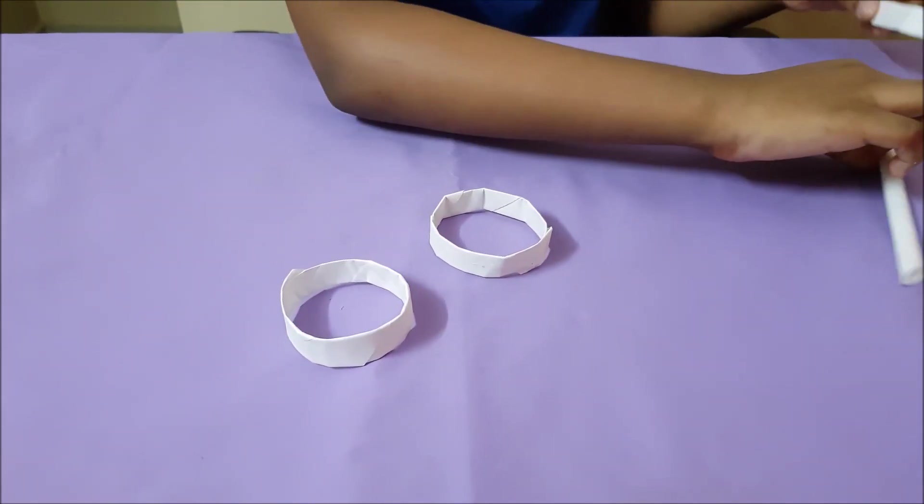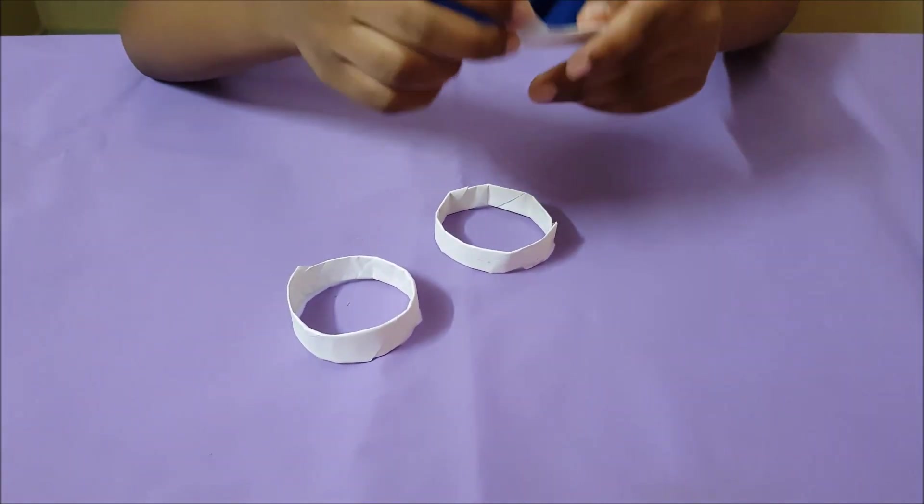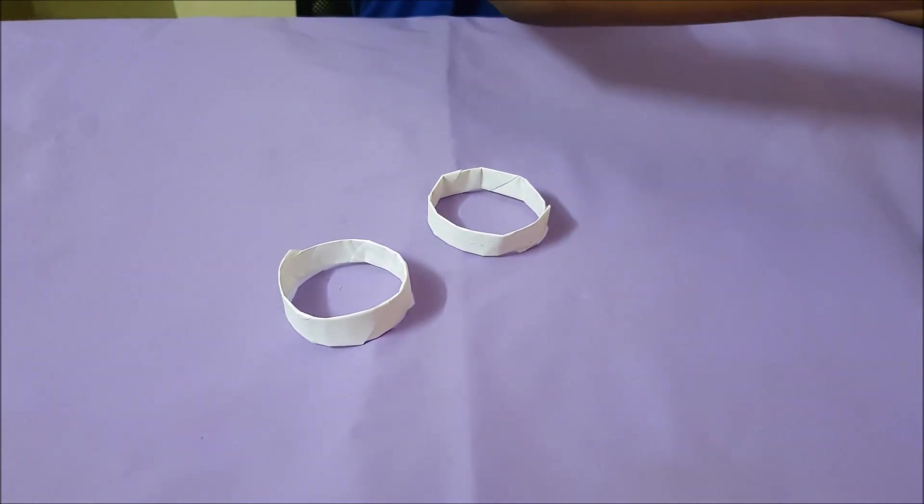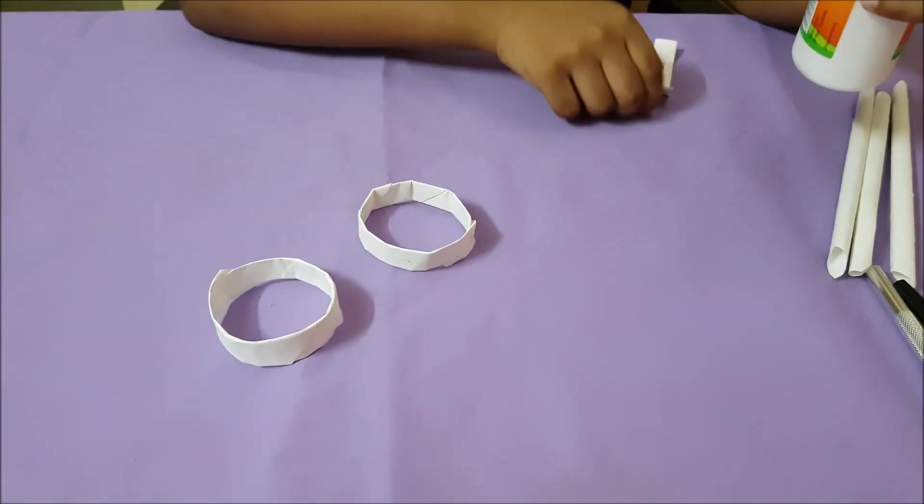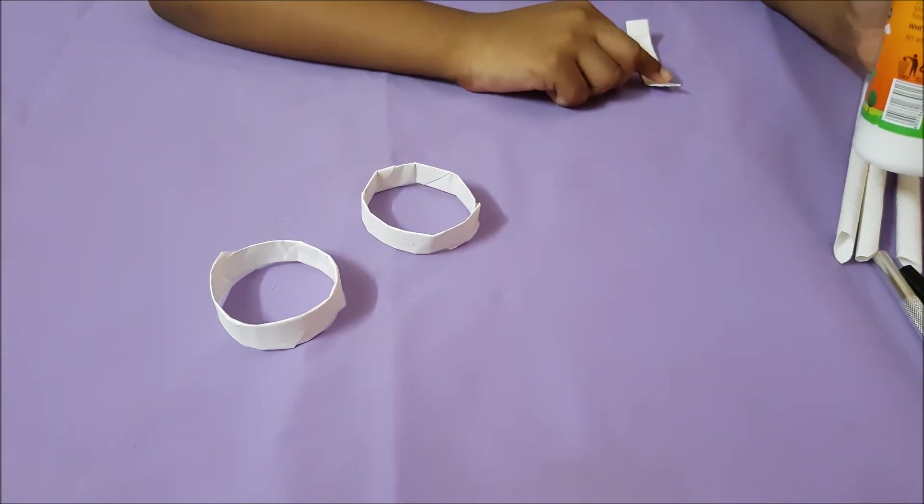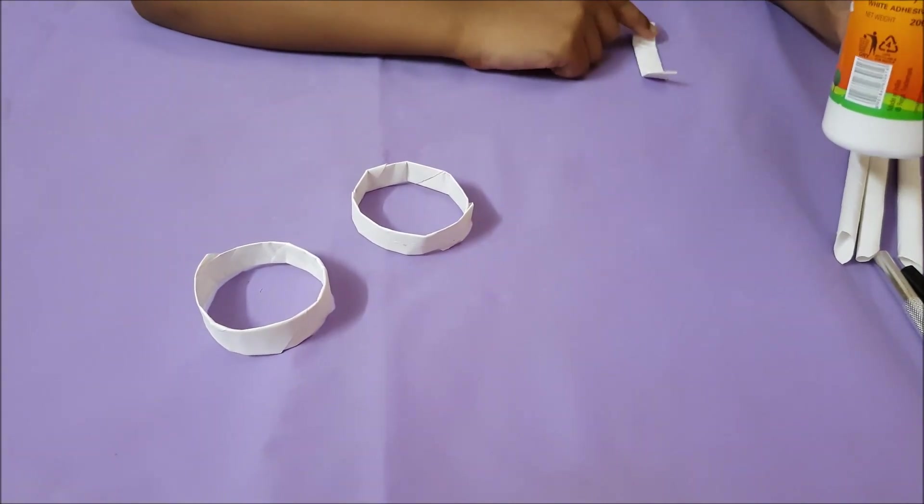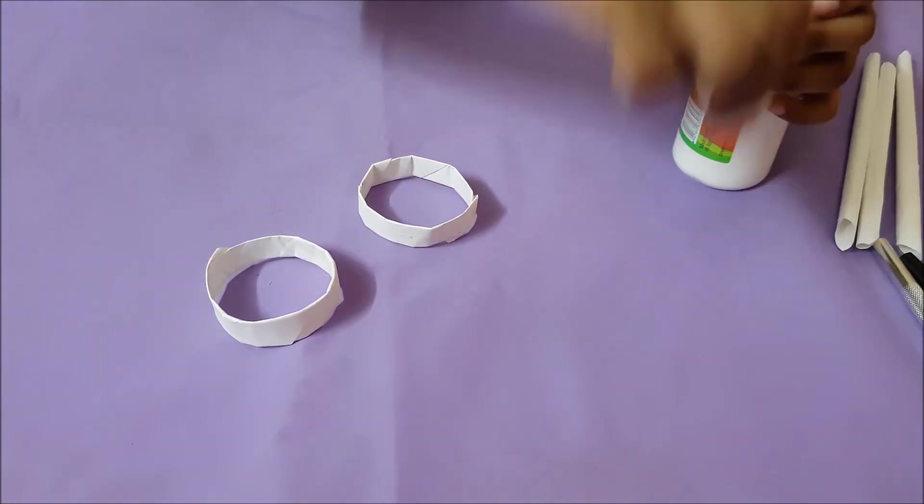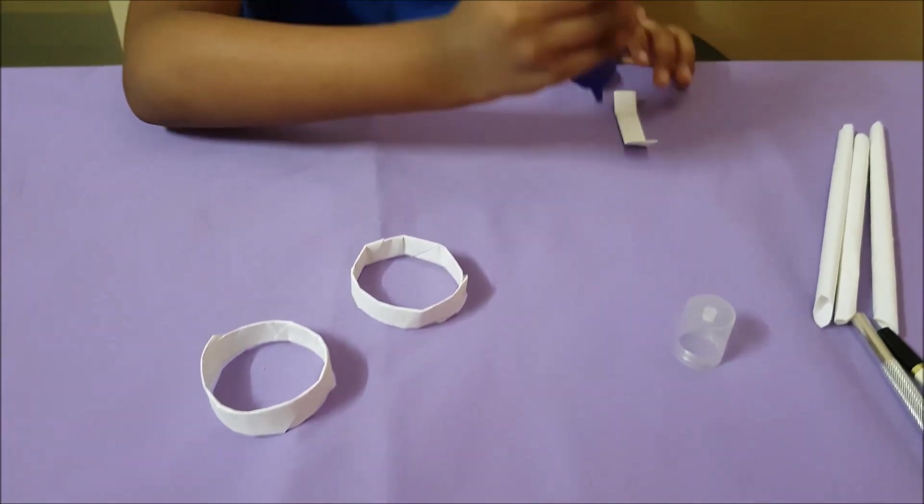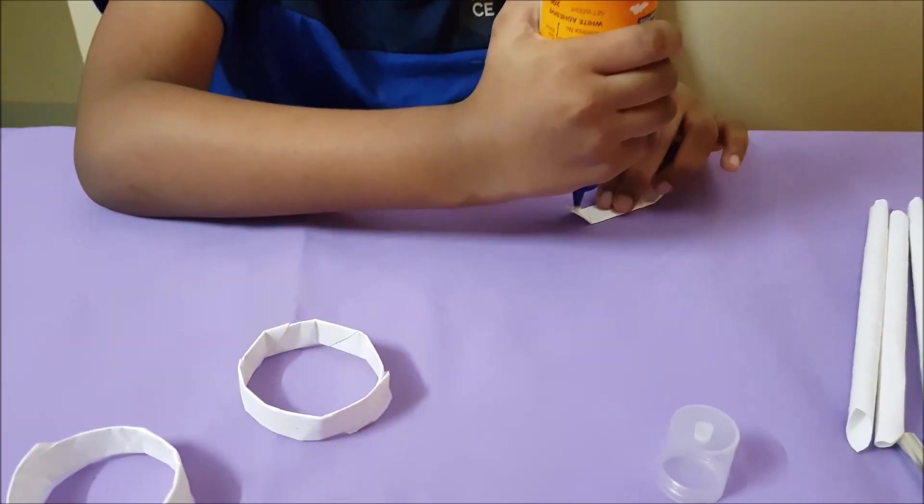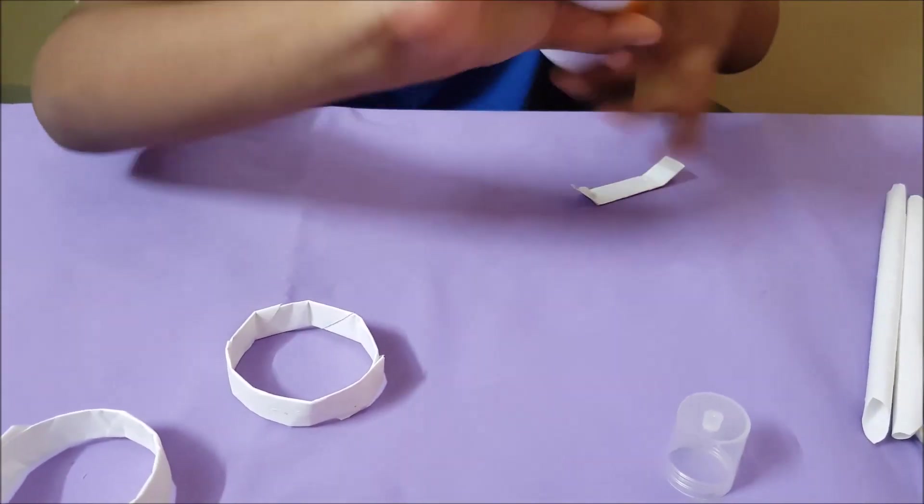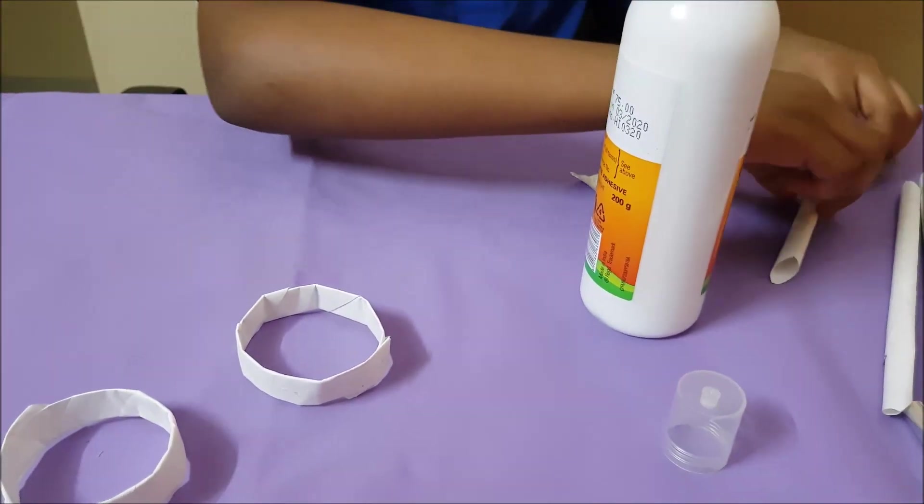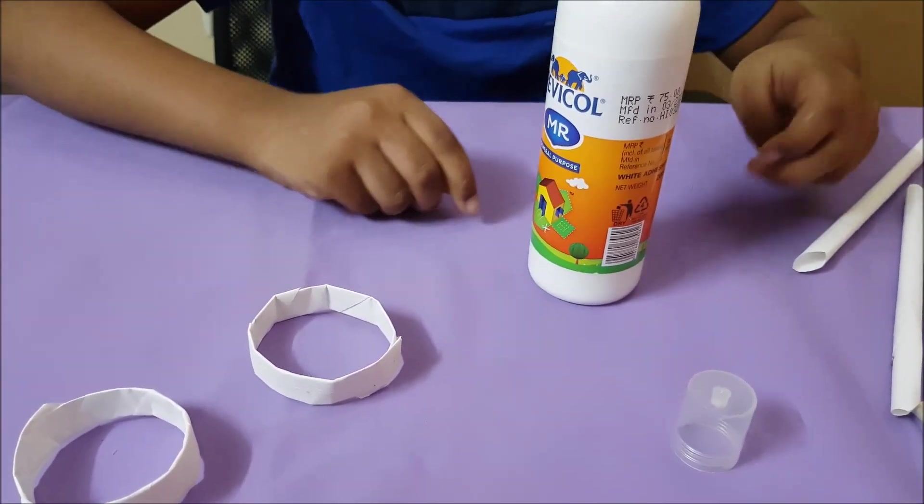Then take one small one and bend those and put glue there. Then we have to put glue in the edge where you have done the gap. Take something and spread it.